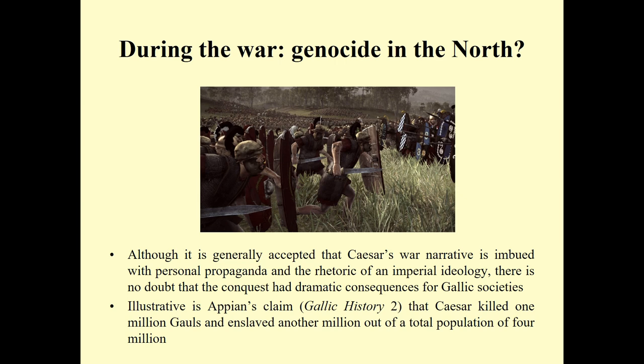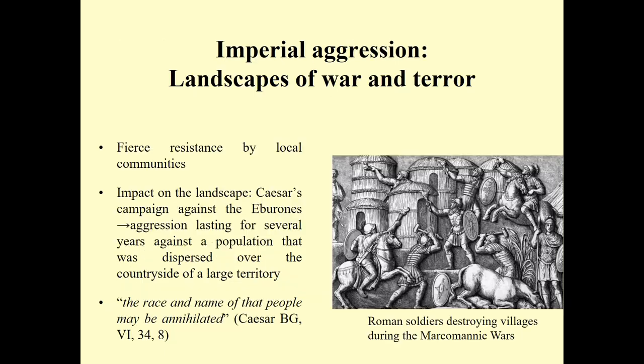Even if those figures might be exaggerated, if you take only half or one third of them, it is still an enormous number comparable to — if not greater than — the number of casualties in 20th-century European world wars. Some Gallic communities, particularly in the northern fringes I am discussing, offered fierce resistance, and Rome reacted in a very violent way. In the case of the Eburones, Caesar declared that the race and name of that people should be annihilated and destroyed — a conscious, at least narrative, decision to exterminate this population.